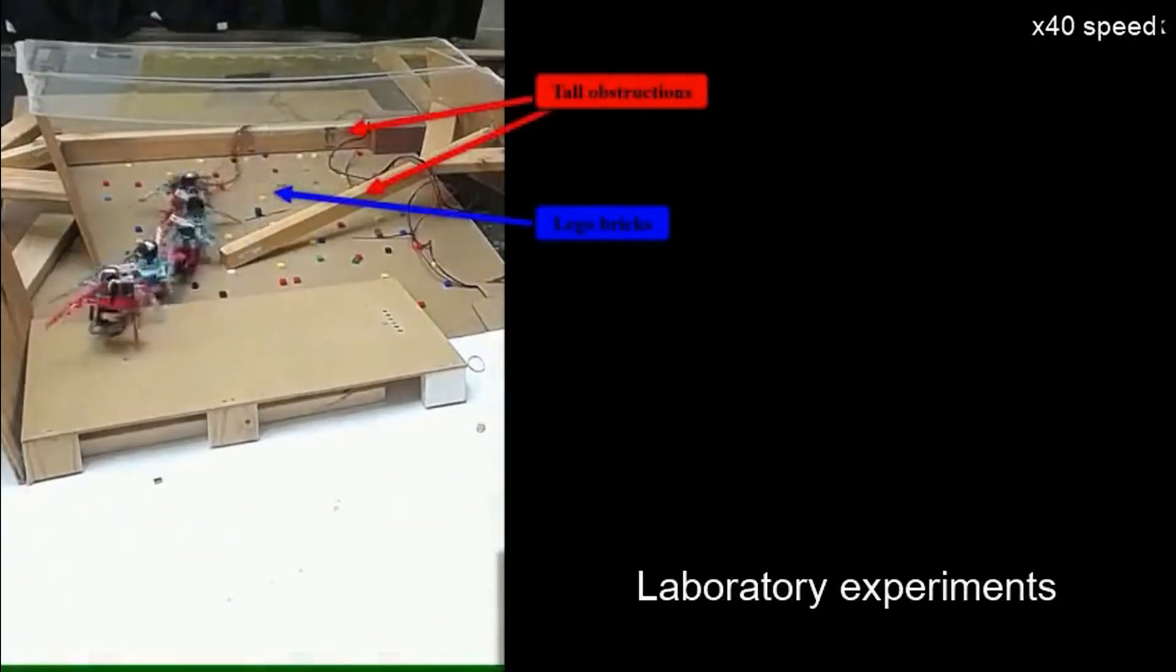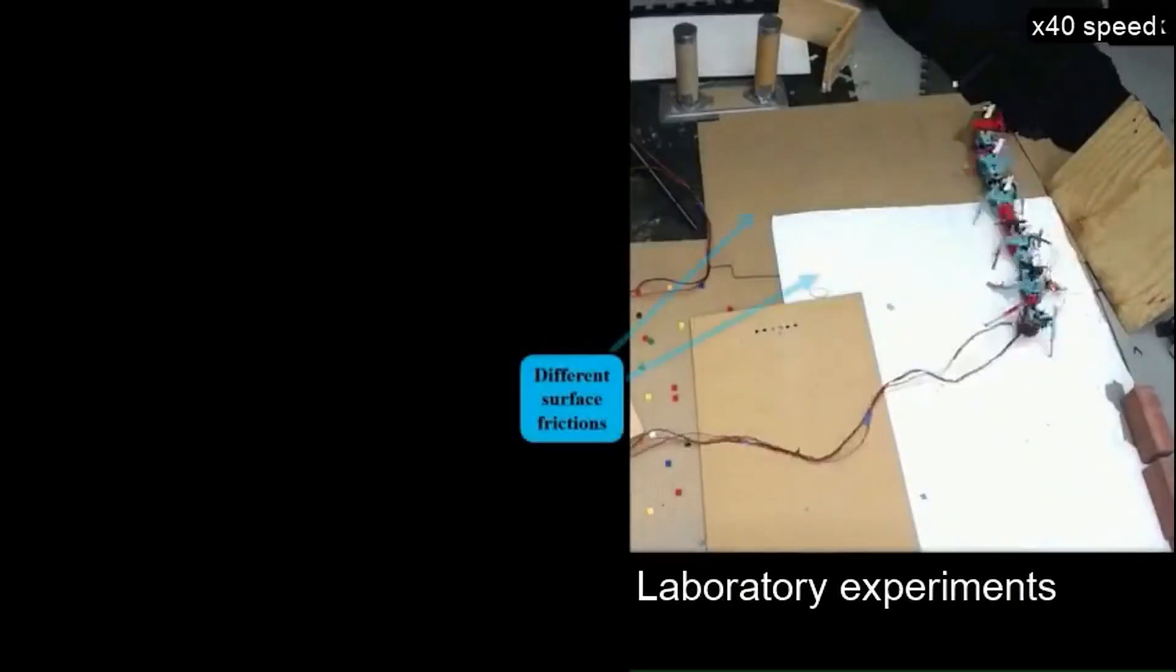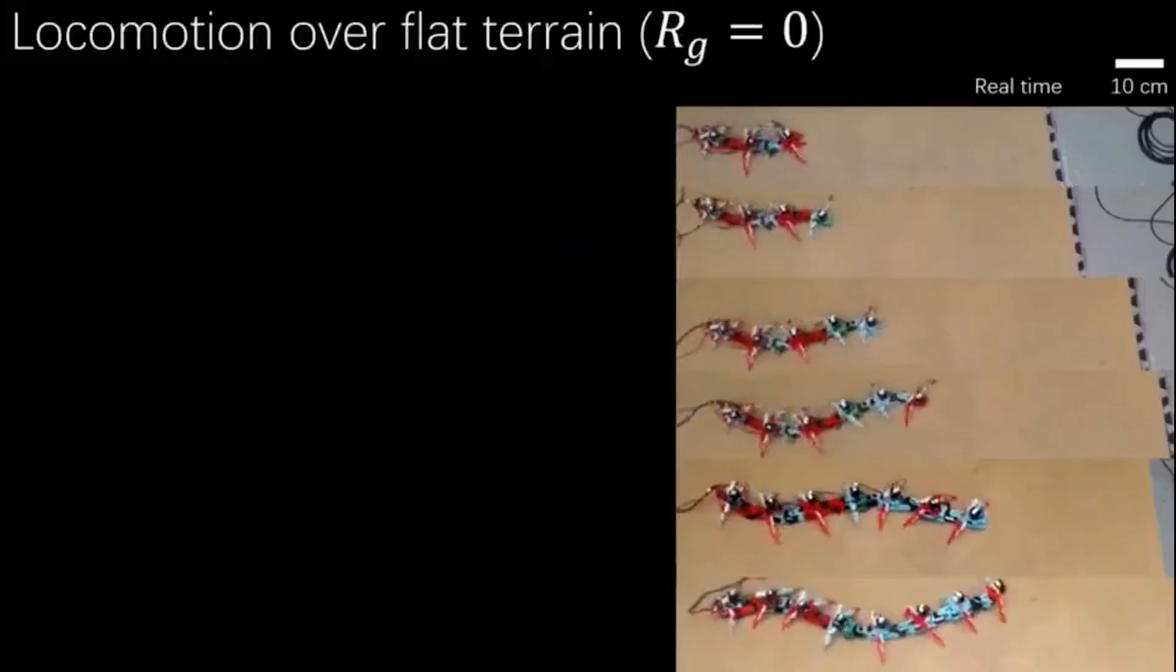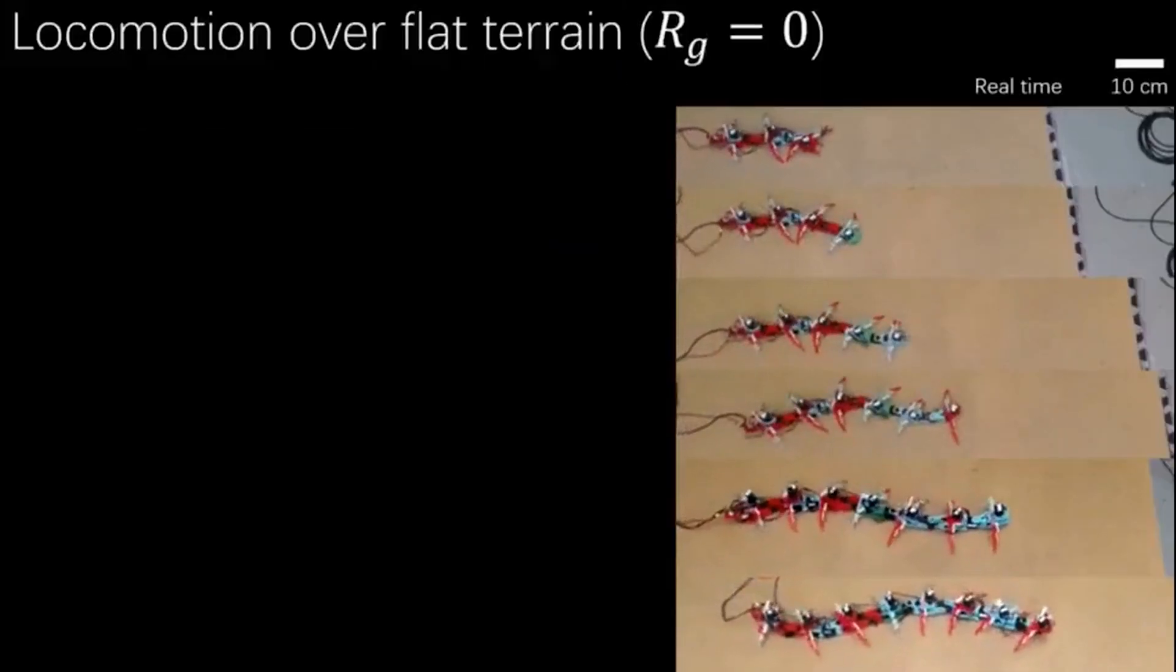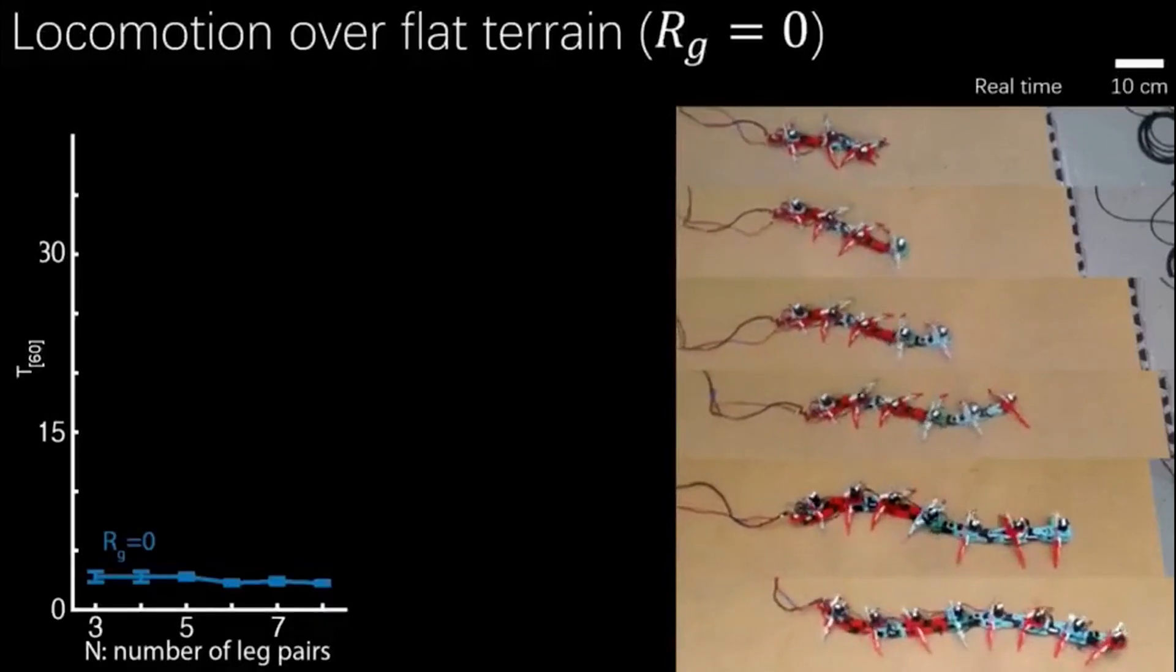Centipedes are fascinating creatures known for their wiggly walk. They can traverse any terrain without stopping with tens to hundreds of legs. When you see a scurrying centipede, you're basically seeing an animal that inhabits a world that is very different than our world of movement.